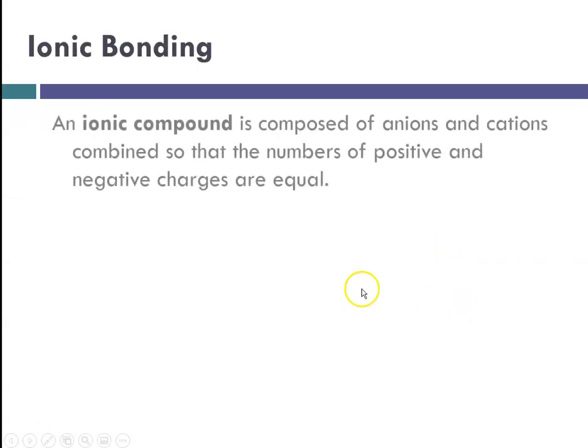Ionic bonding is what is occurring in ionic compounds, and ionic compounds are composed of anions and cations that are combined so that the numbers of positive and negative charges are equal. Remember when we talked about electronegativity differences determine whether a bond will be nonpolar covalent, polar covalent, or ionic. When the electrons are equally shared, it's nonpolar covalent. If the electrons are shared but not equally, it's polar covalent.